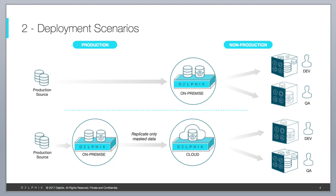Deployment scenario two is where the production source and Delphix are on-prem, and then we replicate — using the replication efficiency mentioned earlier — to a Delphix engine in the cloud or a secondary data center. In that case, the developer and QA analyst can instantly provision their databases wherever they need them.